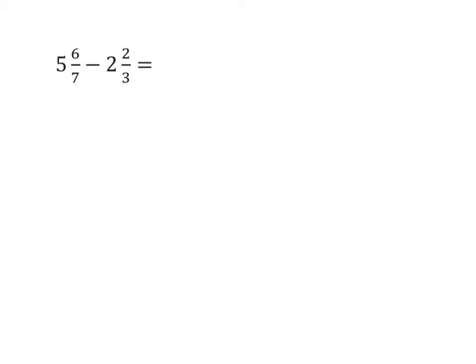Okay, let's work with an example with bigger numbers here. And I'm just, I'm not going to solve this the old way, but I am going to set the problem up. If I want to change 5 and 6 sevenths to an improper fraction, I would get 41 sevenths. And 2 and 2 thirds would be 8 thirds.